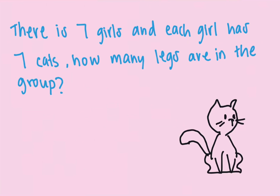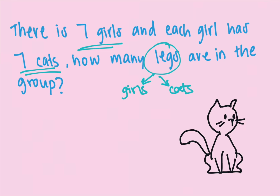This question is about girls and cats. There are seven girls and each girl has seven cats. How many legs are in the group? When they talk about legs, they're referring to both the girls' legs and the cats' legs, so we need to take that into consideration. Cats have four legs, so seven multiplied by four. Then we also add the girl's two legs.